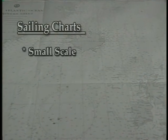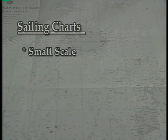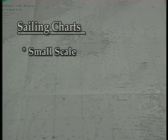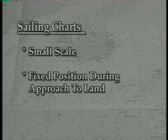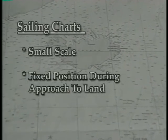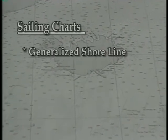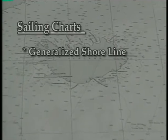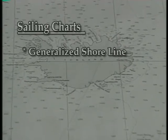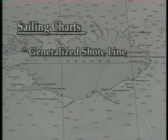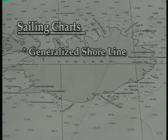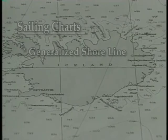Sailing charts use a small scale and show a large area. They are used to fix position during approaches to land. They only show generalized shoreline and topographic characteristics, and they also depict offshore soundings.